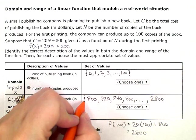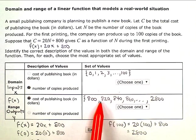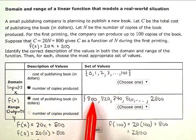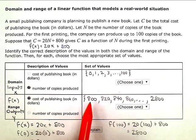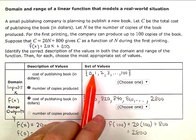And I will never have a cost of, let's say, 810, right? Because zero books cost me 800, one book cost me 820. There's nothing in between here because I'm not making or printing partial books.